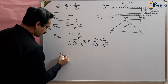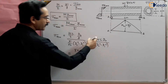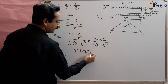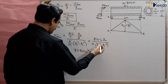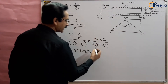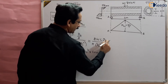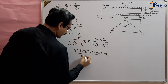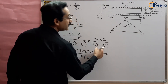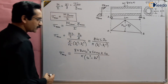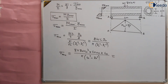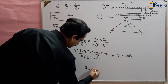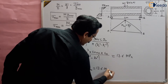Substituting values: W = 80 Newton, L = 4 meter (converted to 4000 mm), outer diameter = 40 mm, inner diameter = 20 mm. Solving this expression, sigma_max comes out to be 13.6 MPa. So the maximum bending stress in the material is 13.6 mega pascal.